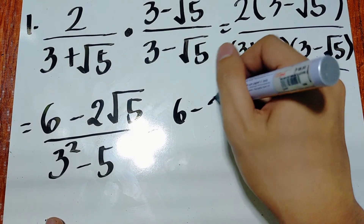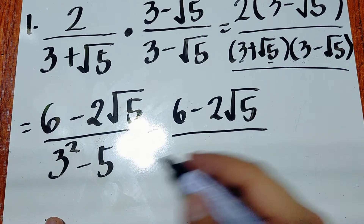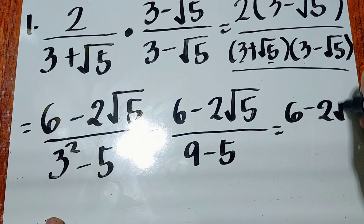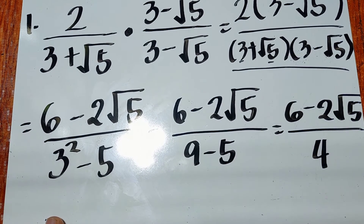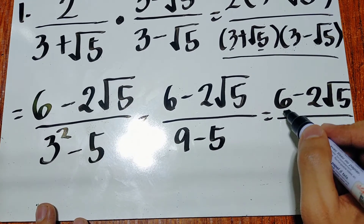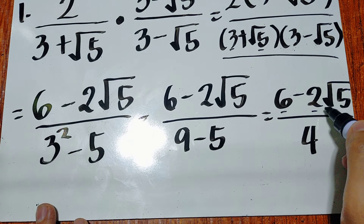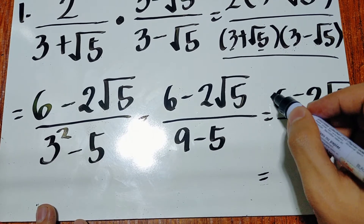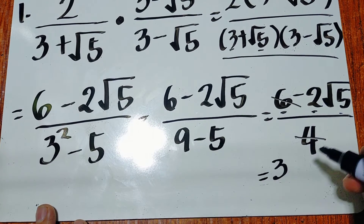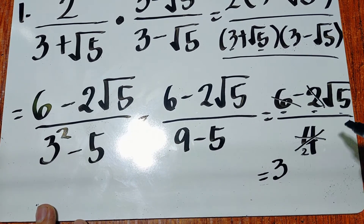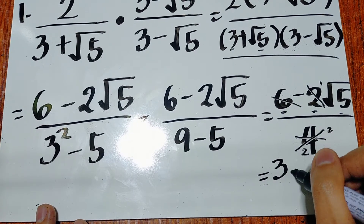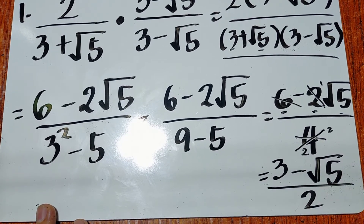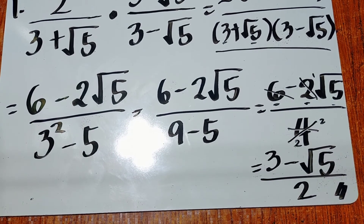This becomes 6 minus 2 square root of 5 over — what is 3 squared? 9. So 9 minus 5 equals 4. Since we can't combine 6 and 2 square root of 5 (they're unlike terms), we divide both by 4. 6 over 4 becomes 3 over 2, and 2 square root of 5 over 4 becomes square root of 5 over 2. The final answer is 3 minus square root of 5, all over 2.